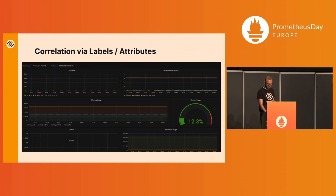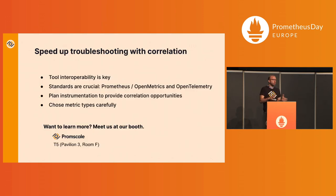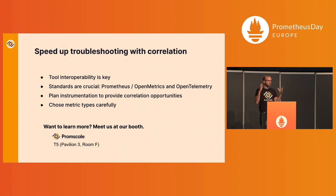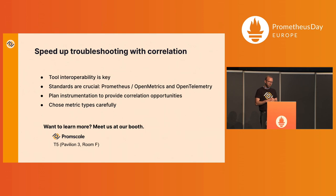Just to wrap up: tool interoperability is key. There is so much momentum with Prometheus for metrics and now with OpenTelemetry especially for traces, which gives us the tooling and foundation we need. You have to plan carefully when doing instrumentation to ensure you'll be able to correlate data in the future — particularly by using consistent tagging across signals, thinking about using exemplars, and choosing your metric types carefully so you can do the mapping correctly. Thank you very much. We have a booth outside, so if you want to talk more about this, I'll be happy to discuss.